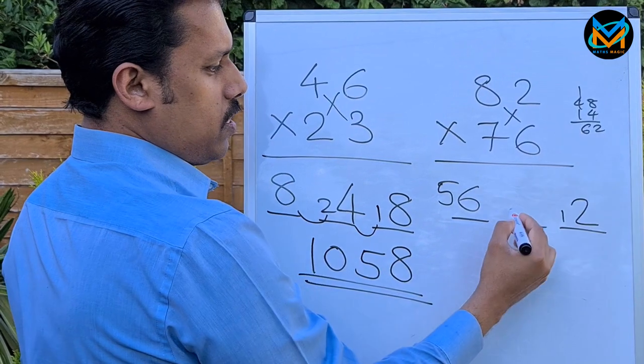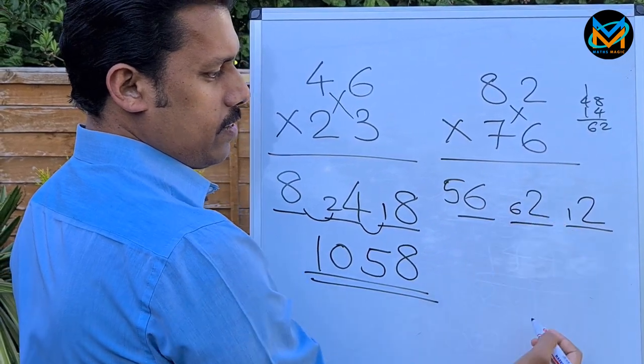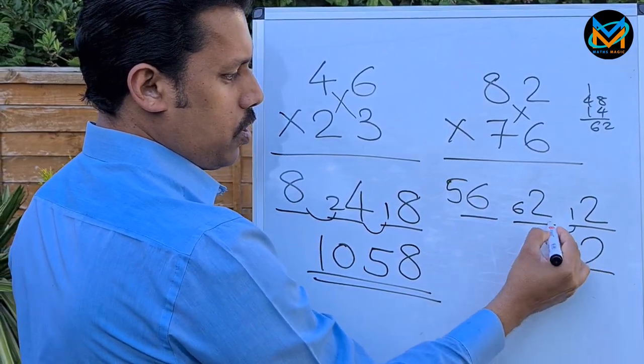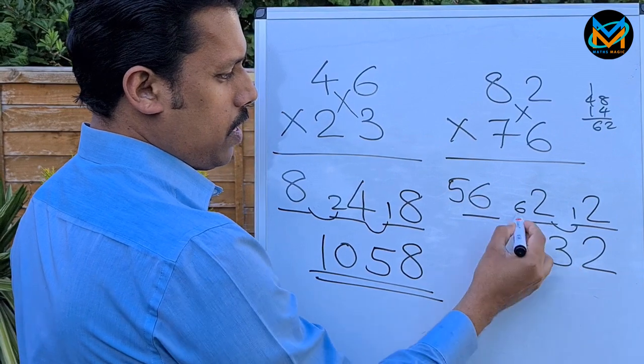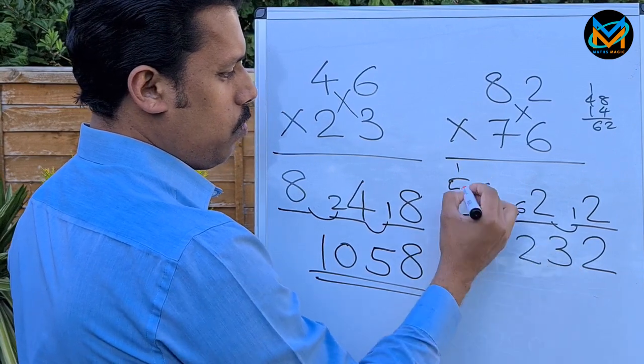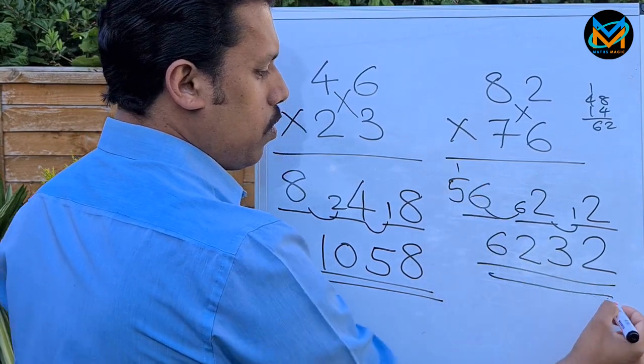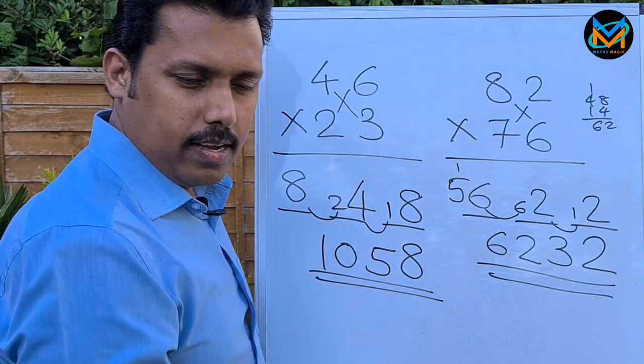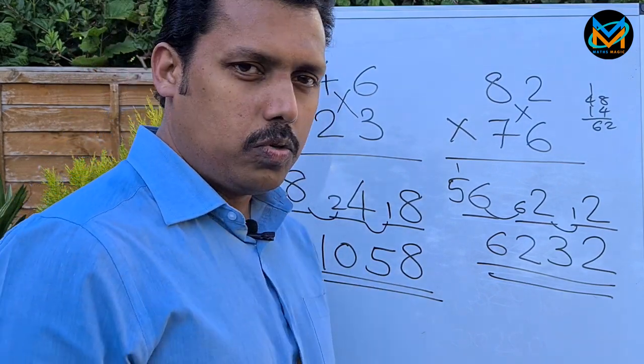Your final answer is 6232. This is the shortcut to use when you multiply a two-digit number by another two-digit number.